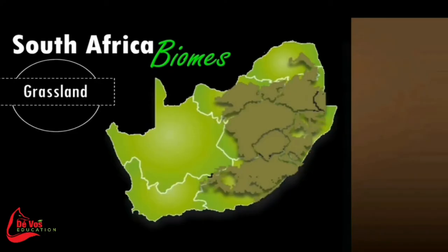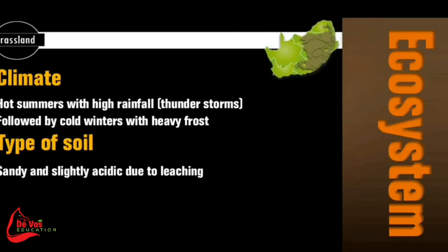The grassland biome covers the high central plateau of South Africa, the interior of KwaZulu-Natal and the mountainous areas of the Eastern Cape. It has high rainfall, and thunderstorms with hail are common in summer. Frost is common during winter. The deep, dark soils are fertile, especially the upper layers. Sweet grasses, which have a high nutritional value and serve as an important food source for animals, grow in the less acidic, more fertile soil, while sour grass grows in less fertile acidic soil and has little nutritional value.